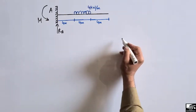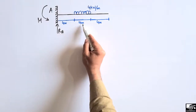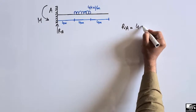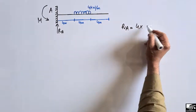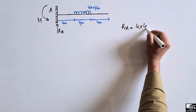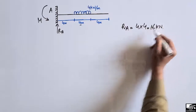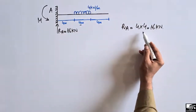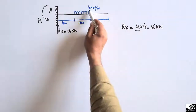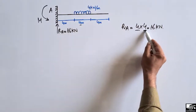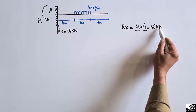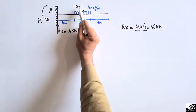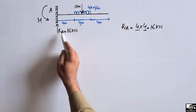To find RA: the load of 4 kN per meter is distributed over a distance of 4 meters, so we multiply 4 kN by 4 meters to get a resultant concentrated load of 16 kN. This 16 kN acts at the center of the uniformly distributed load and will be resisted by support A. So RA equals 16 kN.